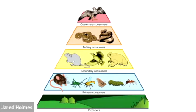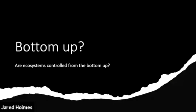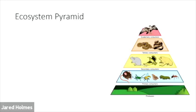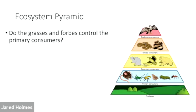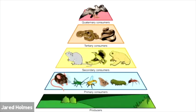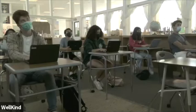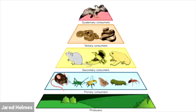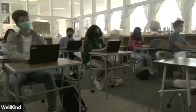Now let's think about regulation. Each ecosystem needs regulation. Are these ecosystems regulated from the bottom up — do the grasses and forbs control the primary consumers, and do primary consumers control secondary consumers? Or are they regulated from the top down — apex predators controlling all other levels? The answer is: it depends. I'm going to play a short five-minute video using the top-down model, the wolves of Yellowstone.